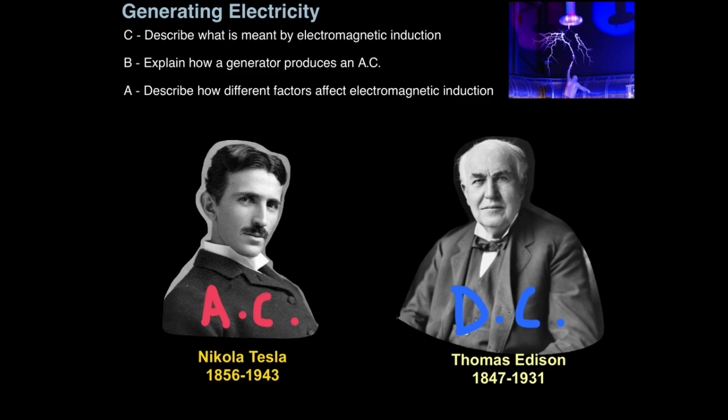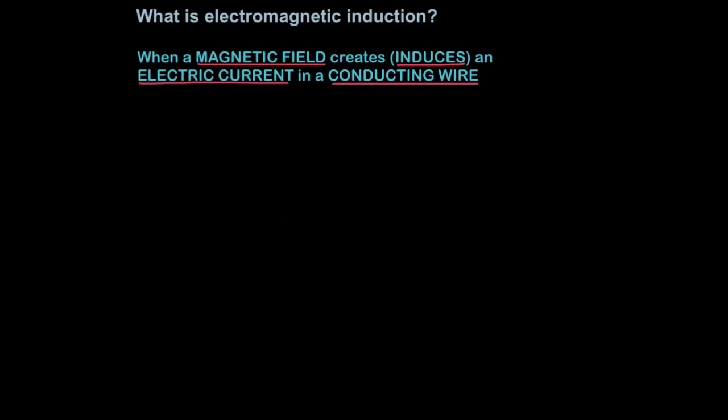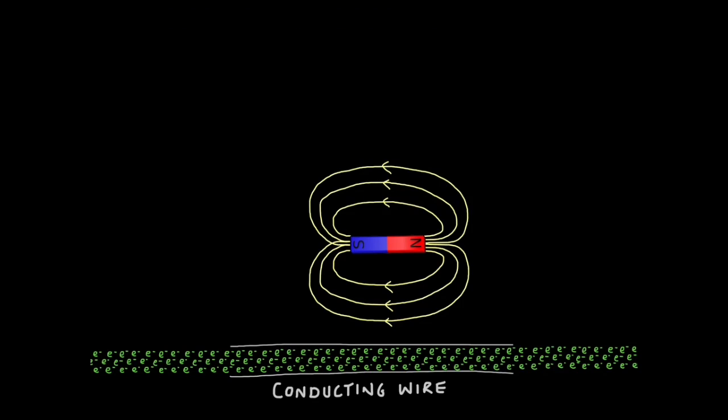So what is electromagnetic induction and how is it related to alternating current? Electromagnetic induction is simply when a magnetic field is used to create or induce an electric current in a conducting wire. In other words, we use magnetism to create an electric current. Here we have a standard bar magnet with north and south poles and we can see the field lines of the magnet.